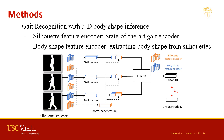In addition, after combining the silhouette features with the body shape features, we use the identification loss L_ID for direct supervision of the person's identity.